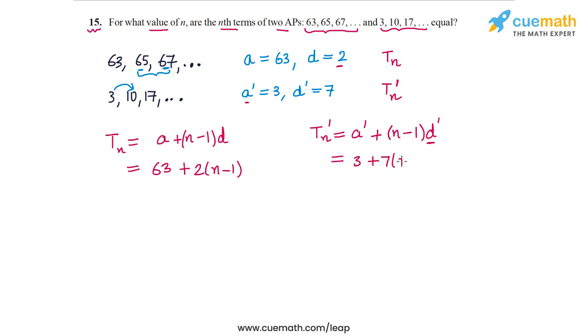Now these two terms should be equal. So if we equate them, we will get an equation in n. So 63 + 2(n-1) is equal to 3 + 7(n-1). So from 63, I can subtract this 3, so I get 60.